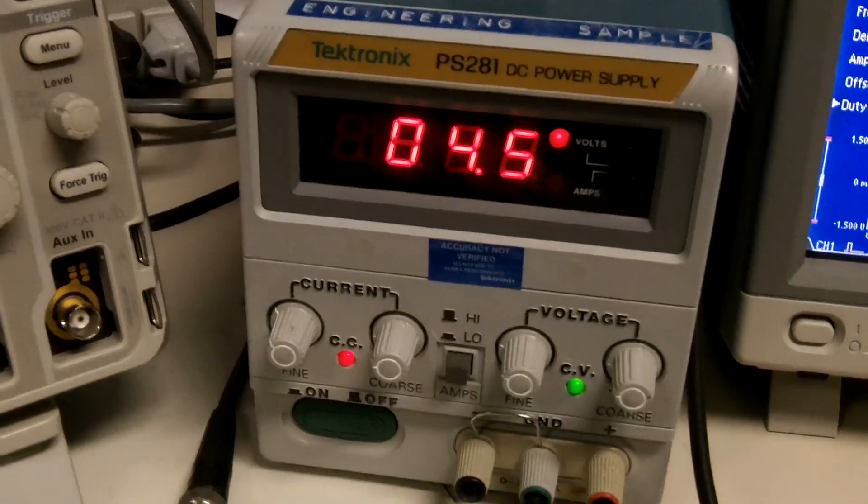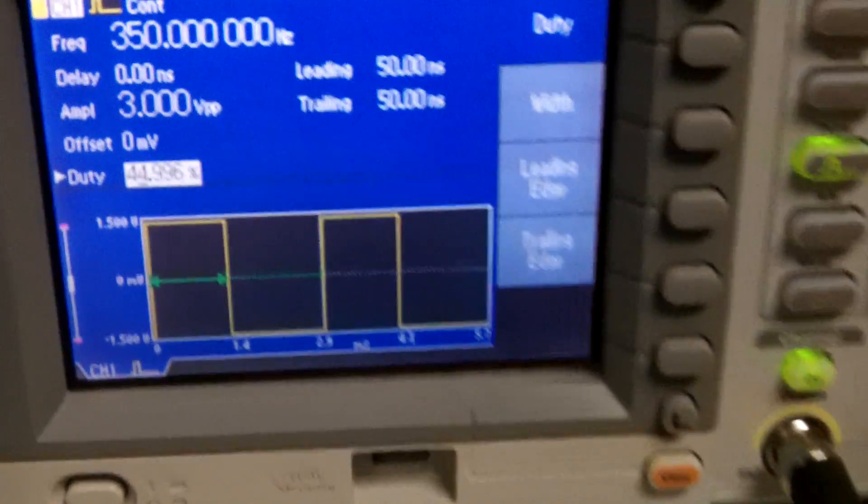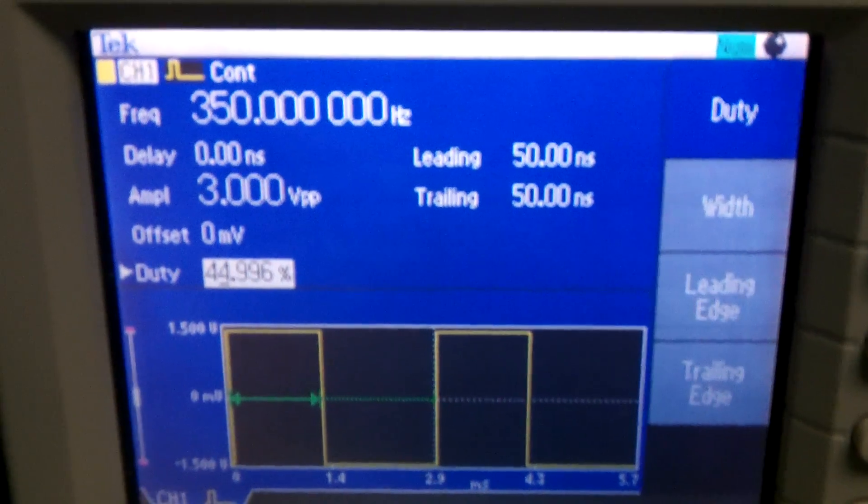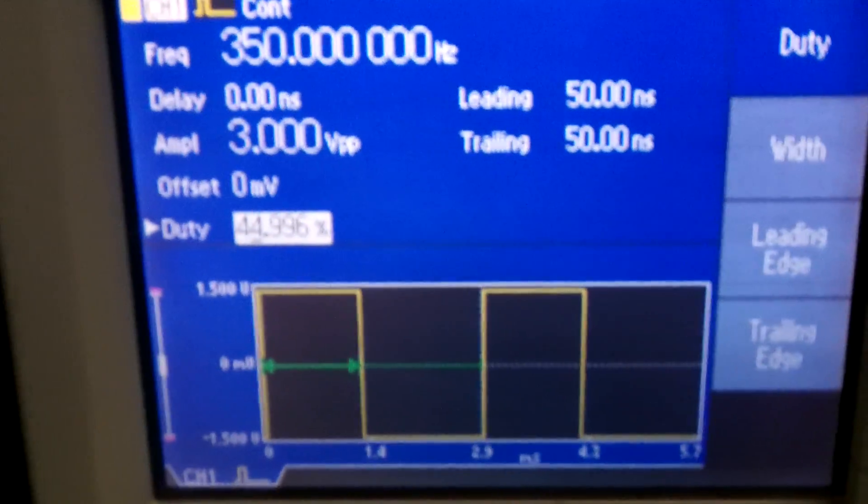So I've got this hooked up to a DC power supply running at 4.5 volts, and then my signal pulse width is run by 350 hertz, 3 volt peak to peak,